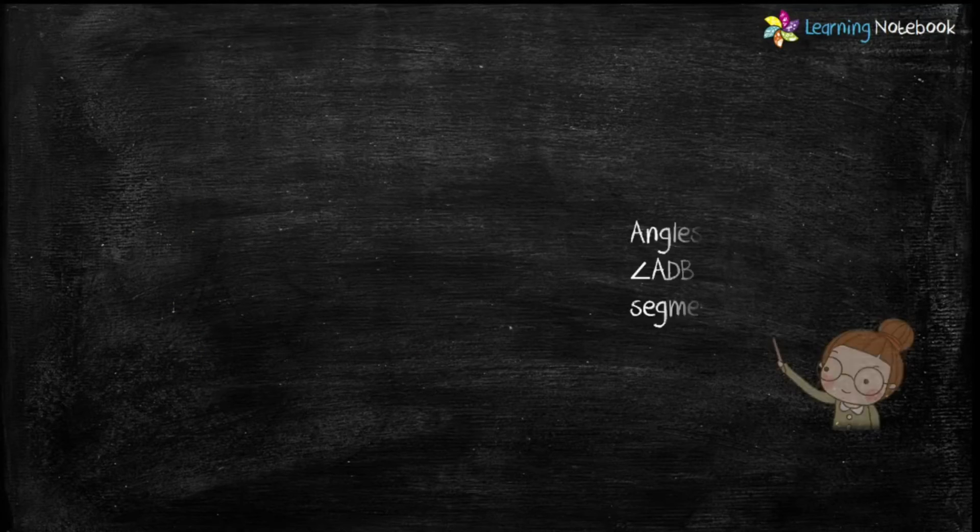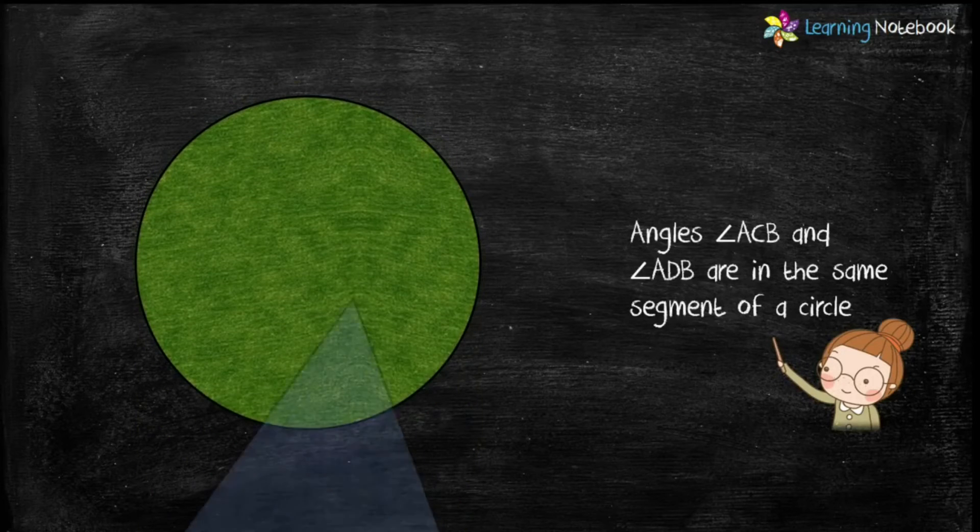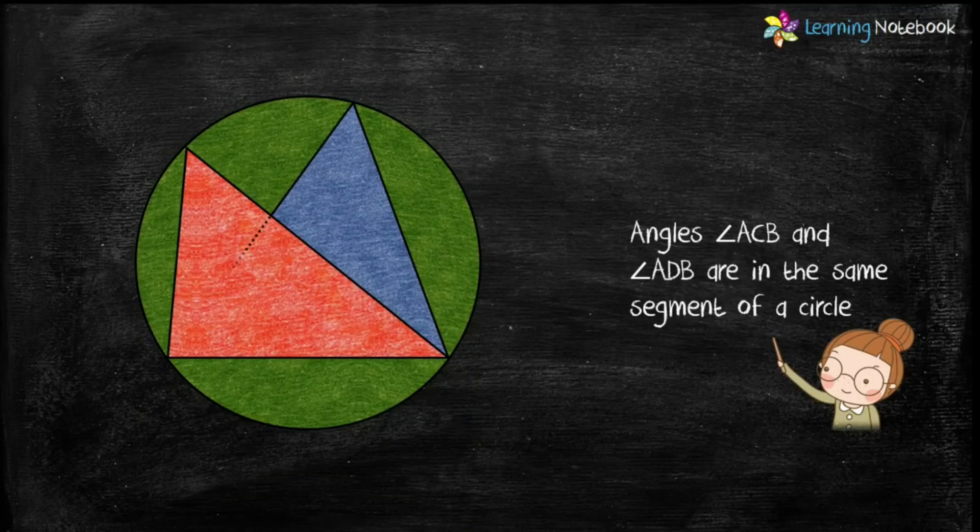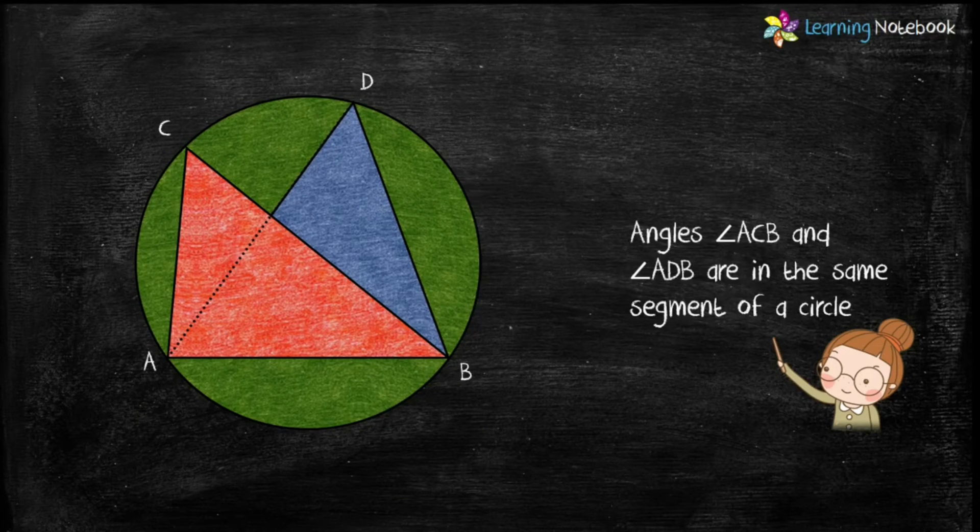So students, we have cut out two angles, angle ACB and angle ADB. These angles are in the same segment of a circle.